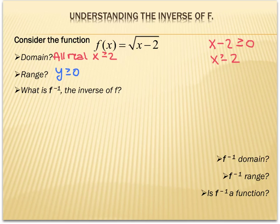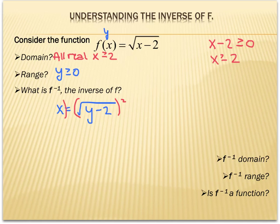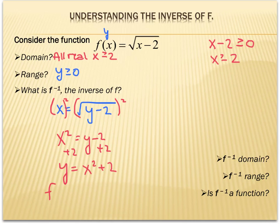To find the inverse, we switch x and y — remember, f(x) is the same as y. Switching x and y and then solving for y: to get y out of the radical, we square both sides, then solve to get y = x² + 2. So f⁻¹(x) = x² + 2. This is the inverse function.